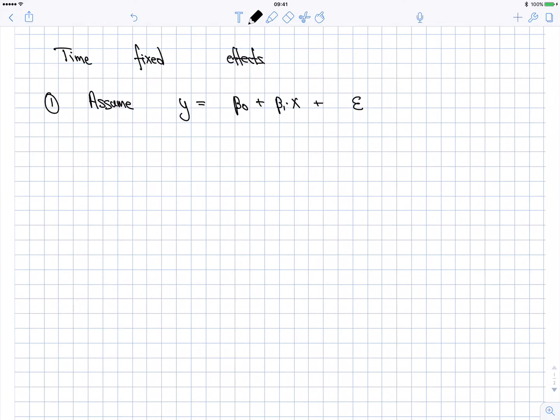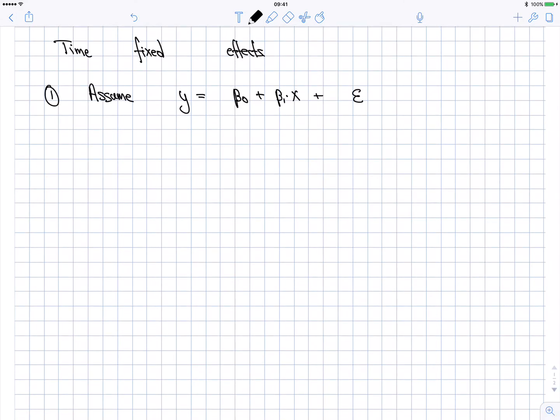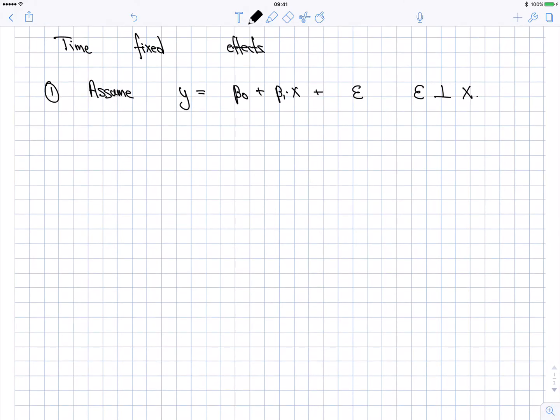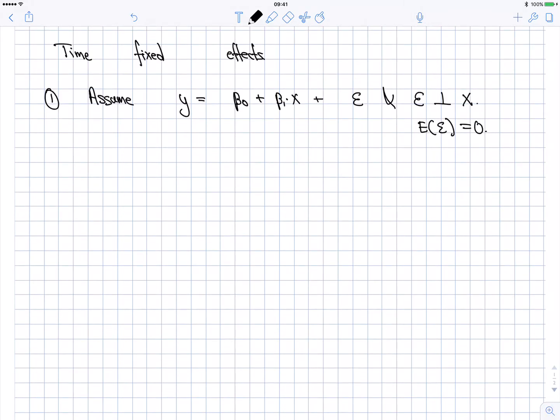And further assume that the error term is uncorrelated with the x's. It's independent of the x's. We can assume that as well. And if you like, that the expected value of the error term was equal to 0. So on average, you got a 0 there.